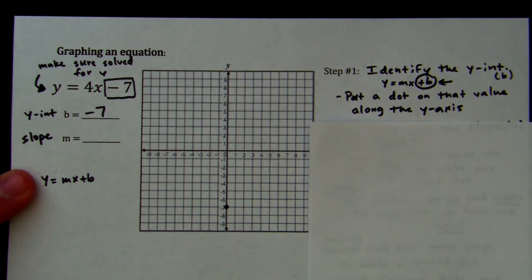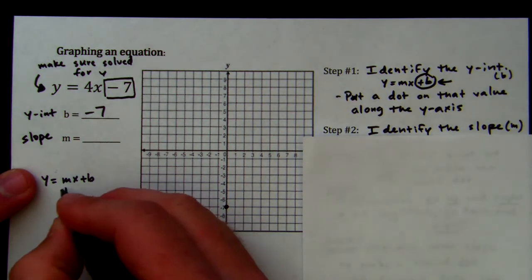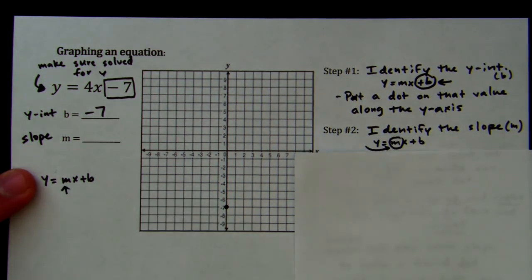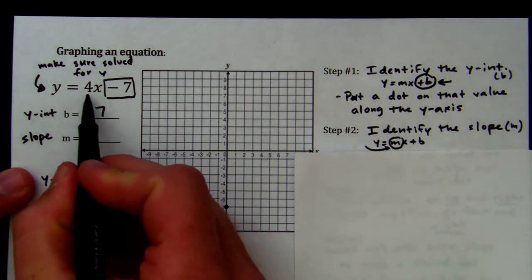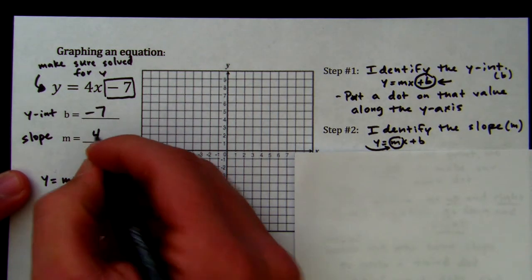That is our y-intercept. That is where the graph is going to cross the y-axis. Now, our second step is we need to identify our slope, which is m, the number right in front of x, and we carry the sign out front. So we have a 4. There is no sign that means it is positive.